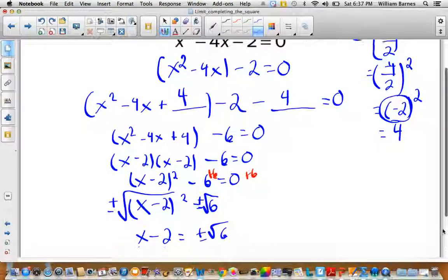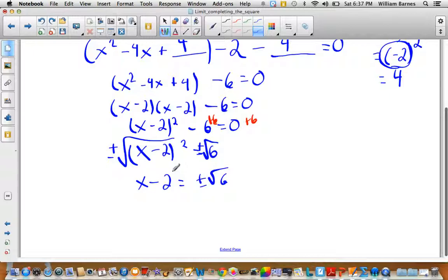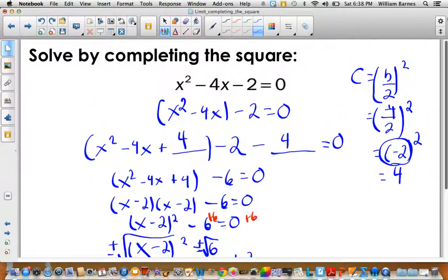The square root and the square cancel, so I'm left with x minus 2 is equal to plus or minus root 6. Then I add 2 to both sides. So I have x is equal to 2 plus or minus root 6. And there she is. That's the solution to the equation that I started with. The key to this question is c equals b over 2 squared.